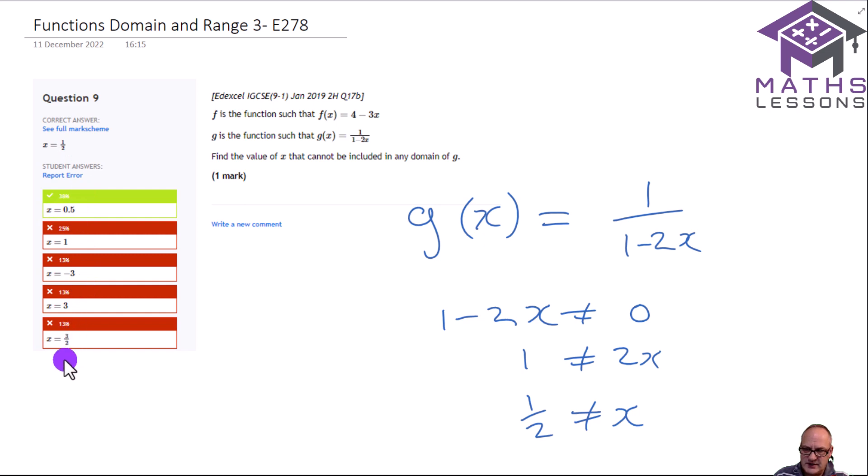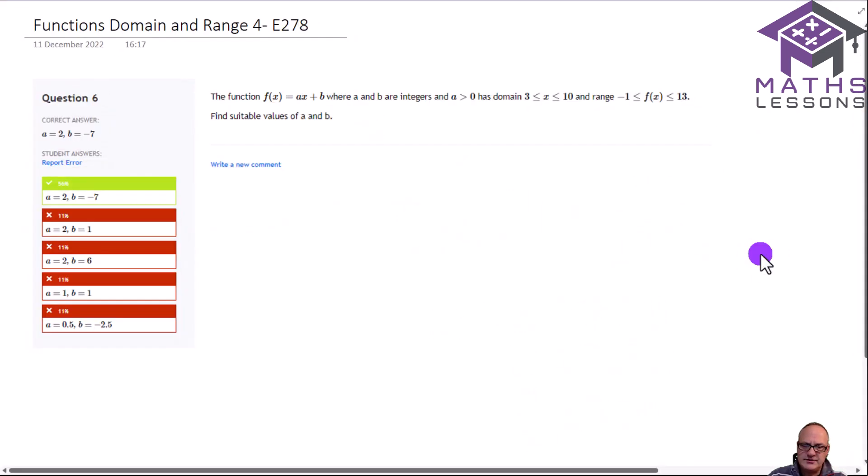And then we had some other answers here which were not correct. Now this is a trickier domain and range function. You've got to realize all the key things that have been given to you. One of the key things it's given to you is that a is greater than 0 in the function f of x equals ax plus b. You're also supposed to realize that f of x equals ax plus b is a straight line.